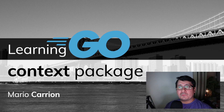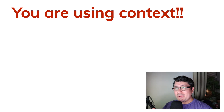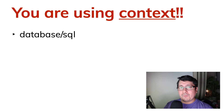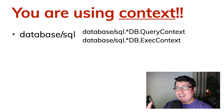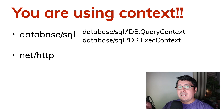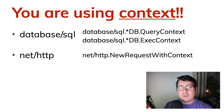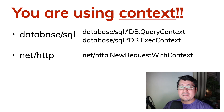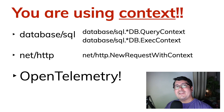Hi, my name is Mario. Welcome to another video. In today's episode we're going to be learning about Go, specifically about the context package. The context package is something you most likely are already using — if you've used the database/sql package, you've likely seen the db.QueryContext and db.ExecContext methods. Those receive a context type as the first argument. Not only that, net/http also has a method called NewRequestWithContext that uses the context package. And if you use OpenTelemetry, you're also using the context package.